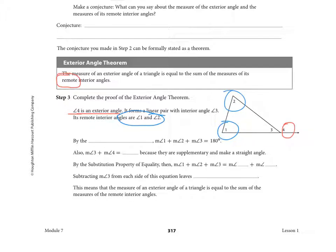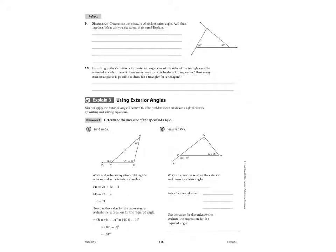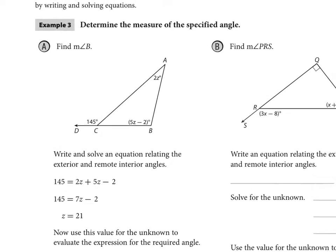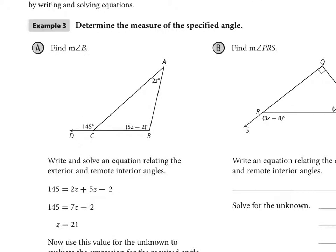So let's look over on the next page to an example. So find the measure of angle B. Now we know that that theorem tells us that the exterior angle is equal to the sum of the remote two. So look what they've done right here. The remote angle is equal to the sum of the remote two angles. Okay, so do you see how that does that?